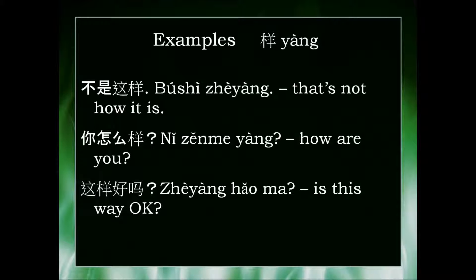The first example is 不是这样. Let's say I'm an apprentice learning woodworking and I've chopped the wood in the wrong way. The teacher could say 不是这样 — that's not how it is. Directly translated: 不 means not, 是 means is, 这样 means this way — so, it is not this way, or that's not how it is.